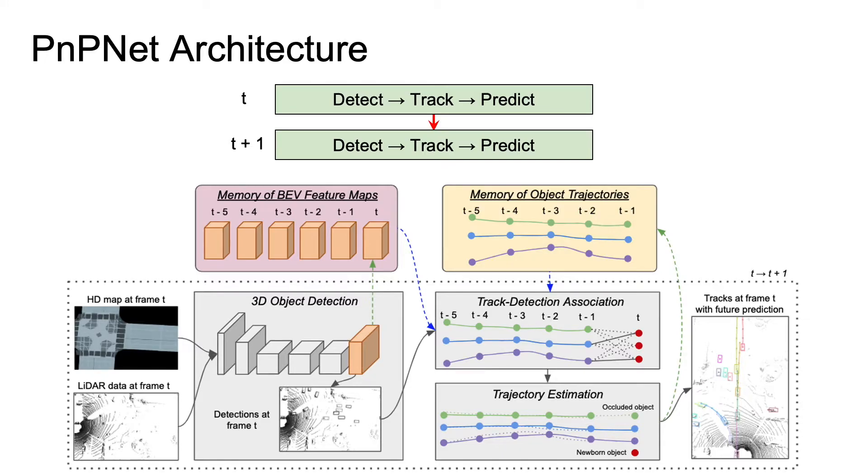To keep track of objects under occlusion, we equip the model with an explicit memory capturing appearance as well as inferred trajectories.